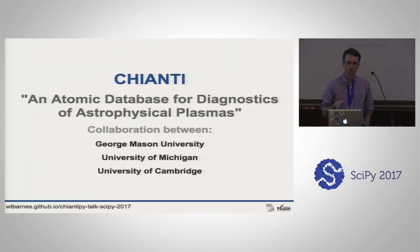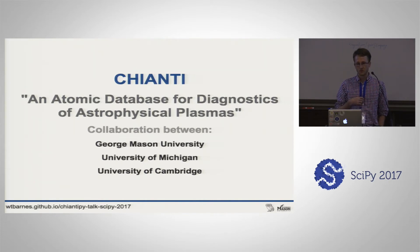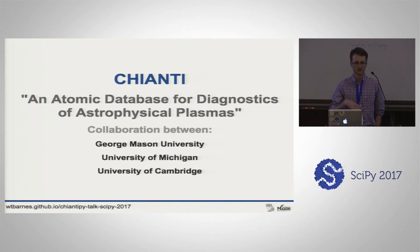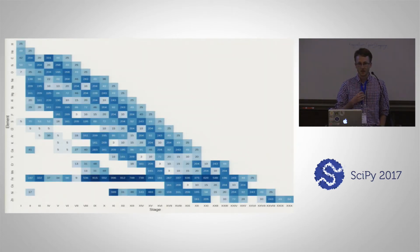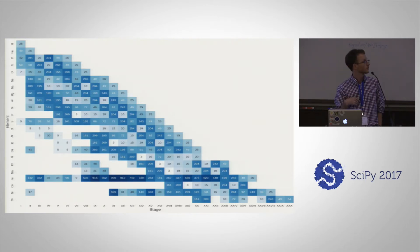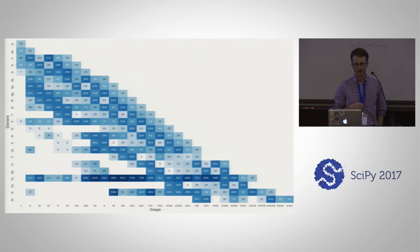Chianti is most heavily used by the solar physics community but also by the astrophysics community. It's a collaboration between George Mason University, the University of Michigan, and the University of Cambridge, as well as many other contributors. The Chianti atomic database contains about 30 different elements and all of the associated ions for those elements. This is the Chianti periodic table, with charge state on the x-axis and element on the y-axis, and colors showing the number of energy levels available.